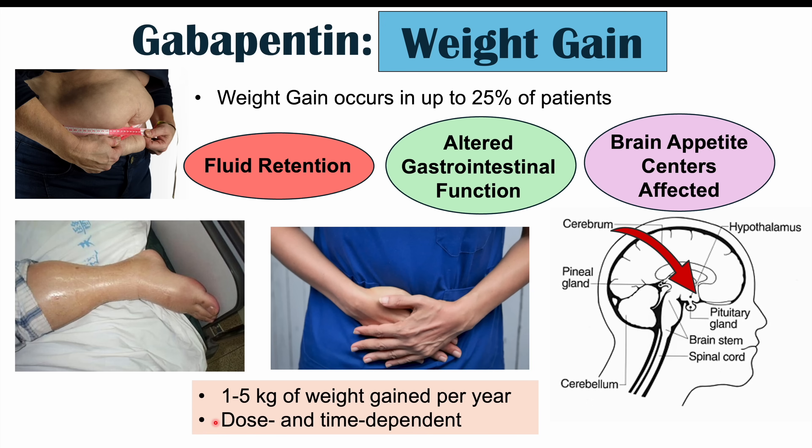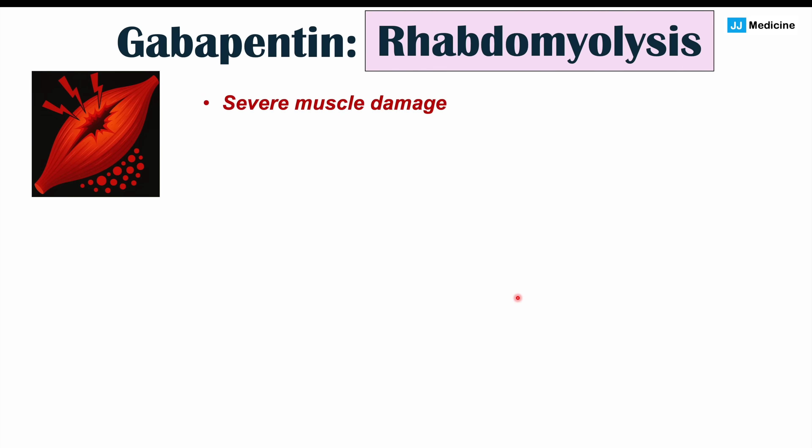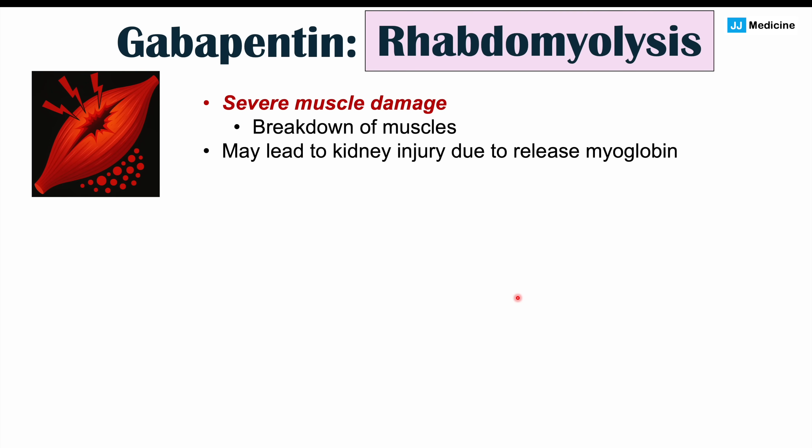That is an important health consequence of gabapentin use. Moving on to the second health consequence: rhabdomyolysis. Rhabdomyolysis is severe muscle damage — the muscle breaks down, leading to a release of myoglobin. Myoglobin is the muscle's equivalent of hemoglobin.